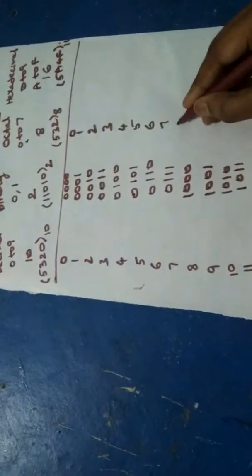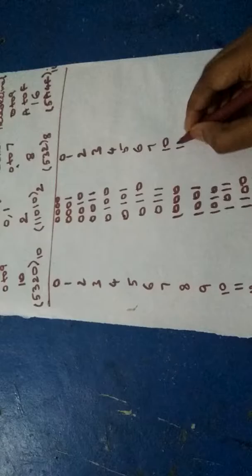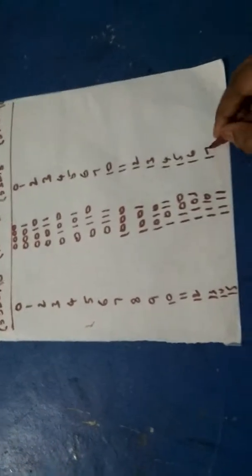After 7 we have to start with 0, so 8 and 9 are not there in octal number system. So it's 10, 11, 12, 13, 14, 15, 16, 17. The number 15 in decimal number system is the number 17 in octal number system.